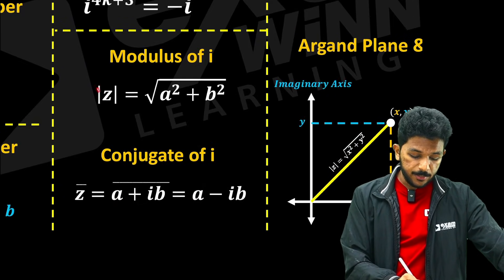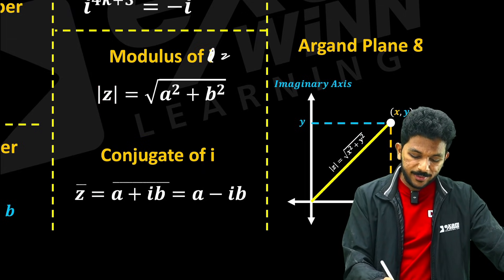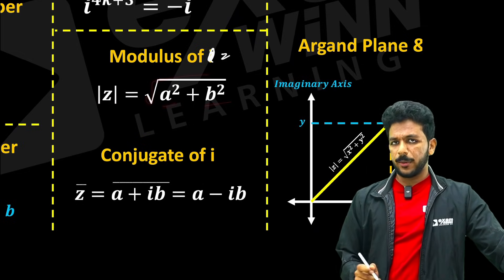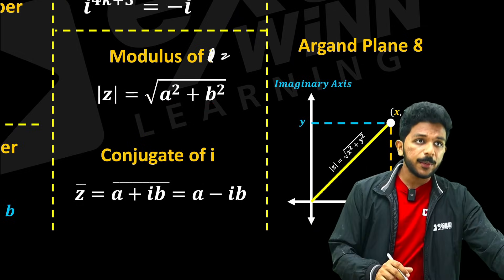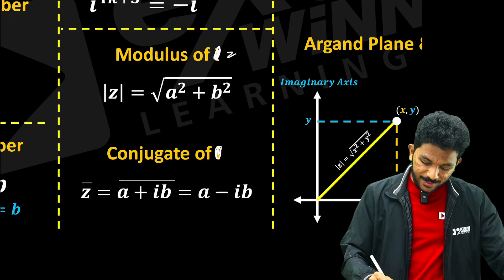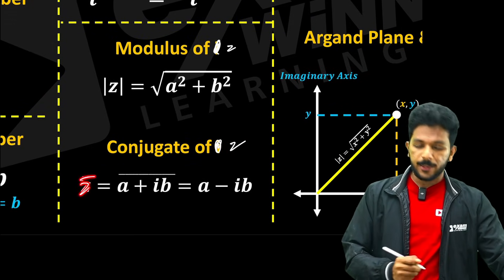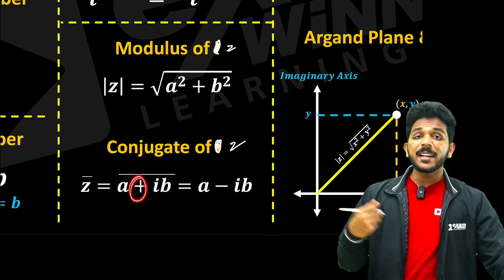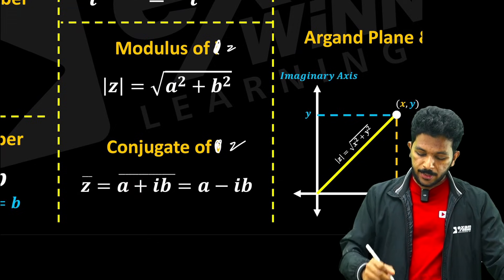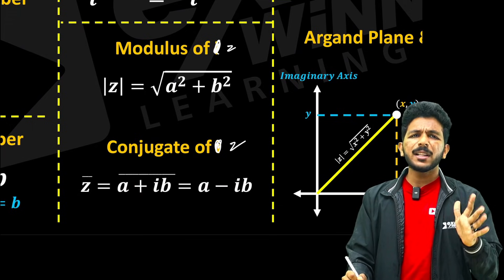Modulus of z is the absolute value: mod z equals root of a squared plus b squared. That is the modulus of the complex number. The conjugate of z — what is z-bar? Z-bar is a minus ib. If the imaginary part is positive, take minus for the conjugate; the result is a minus ib.